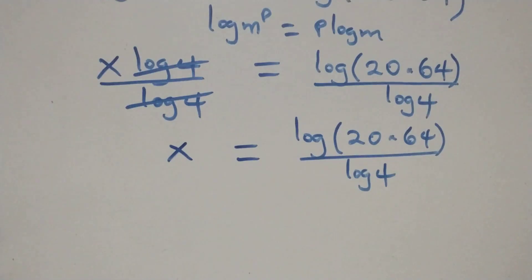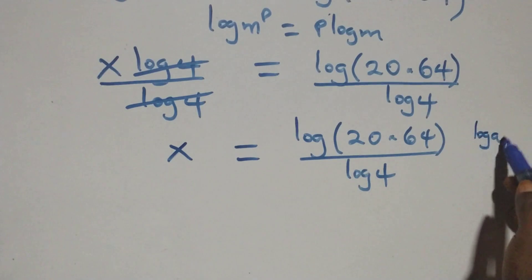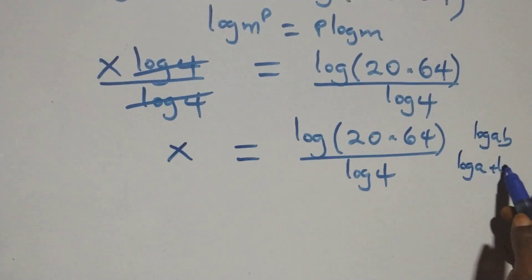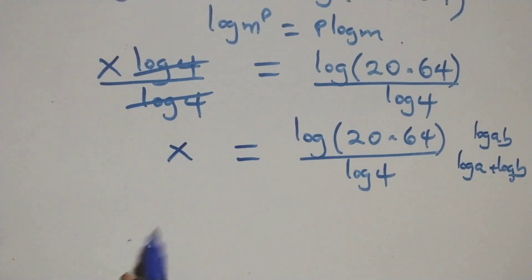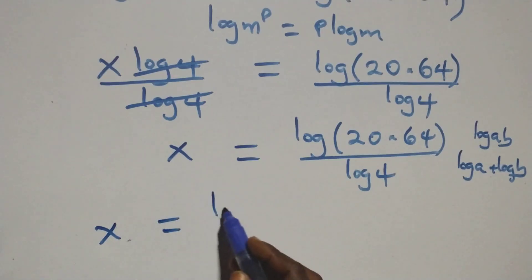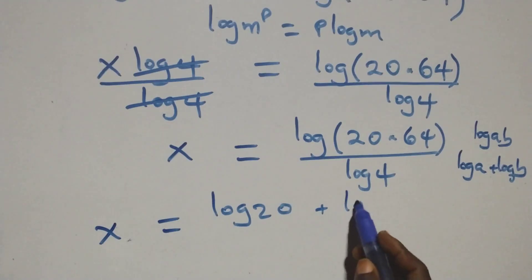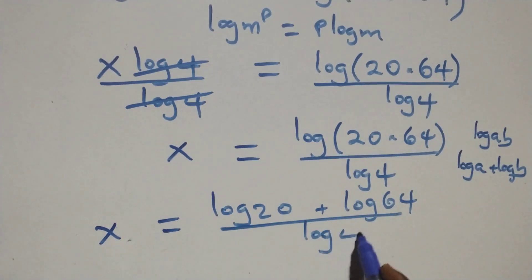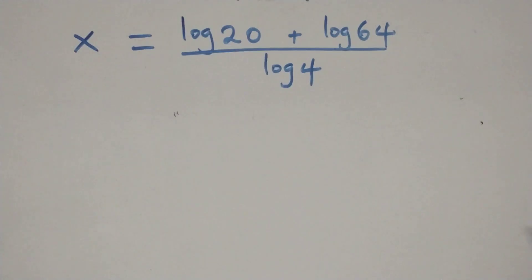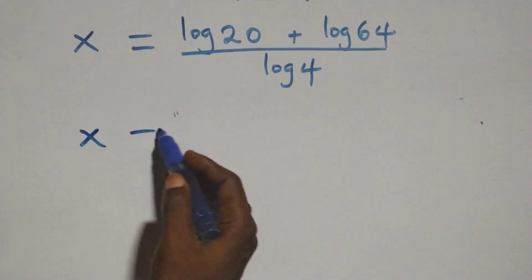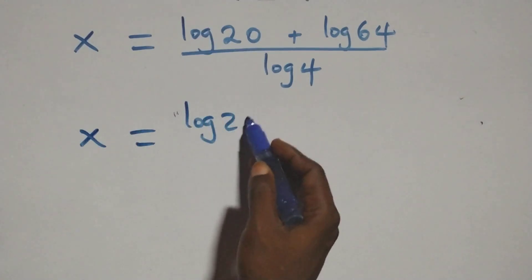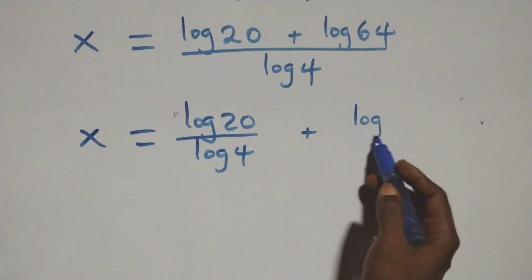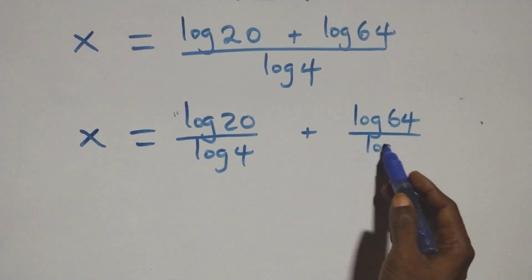Then, from here, this follows the log product rule. When we have log a times b, we can write this as log a plus log b. At this here, we have x equals to log of 20 times 64 over log 4. At the next step, we separate this into two fractions: x equals to log 20 over log 4 plus log 64 over log 4.